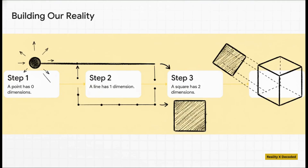Let's quickly build up the reality we all know. We start with a simple point — it has zero dimensions. You move that point, and you've got a one-dimensional line. Move that line, and you get a two-dimensional square. And finally, you move that square, and you've got yourself our good old three-dimensional cube. Each step, we're just adding a new dimension.